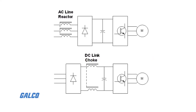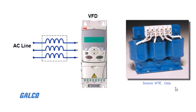With some types of variable speed drives, like DC and current source inverters, it may be necessary to add an isolation transformer or AC line reactors between the source and drive to prevent interference with other electrical equipment.